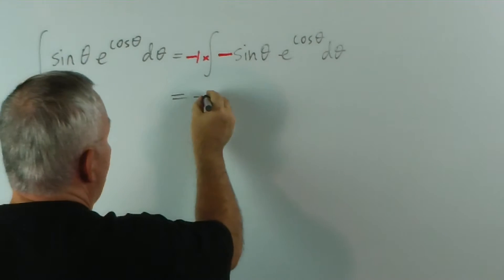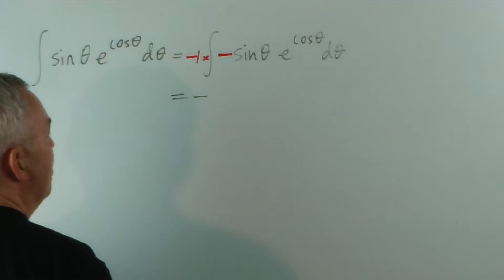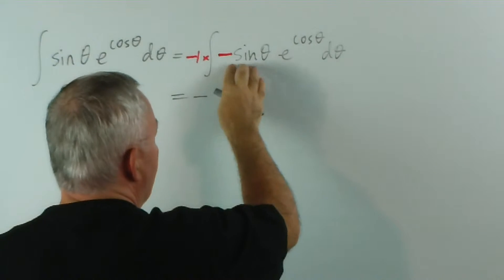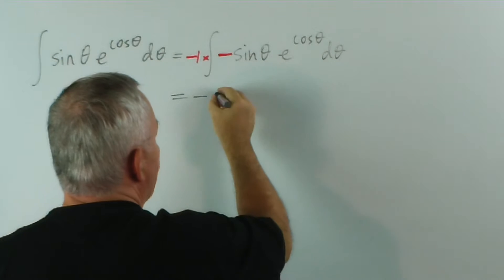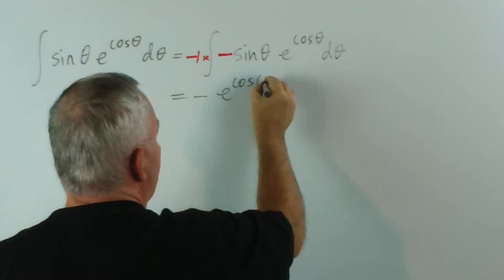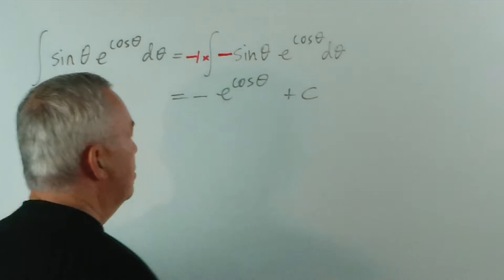And we're left with minus, or minus one, times this. And this is the exact derivative of that. So the integral is simply e to the cos theta. How simple!